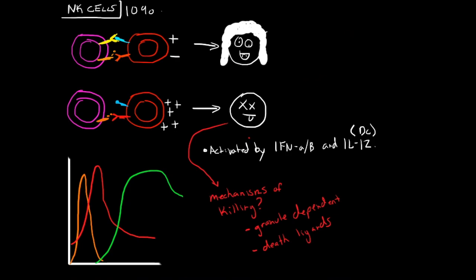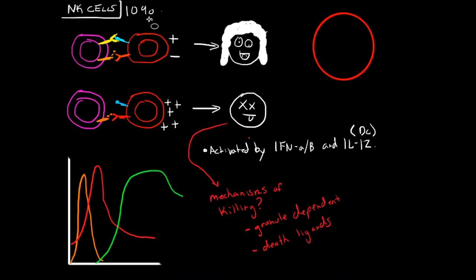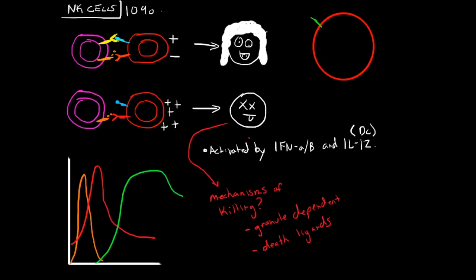Some things that natural killer cells express are interleukin-2 receptor beta chains, so IL-2 receptor, CD2, and they might have some CD16.